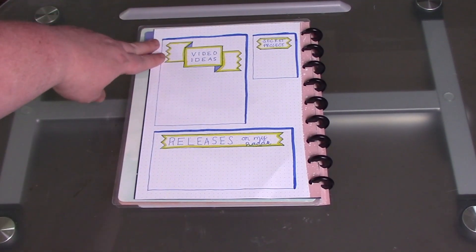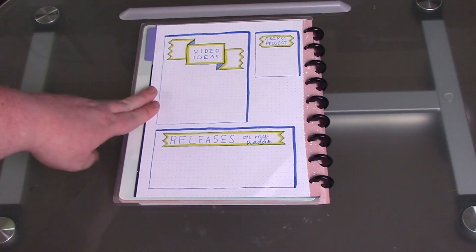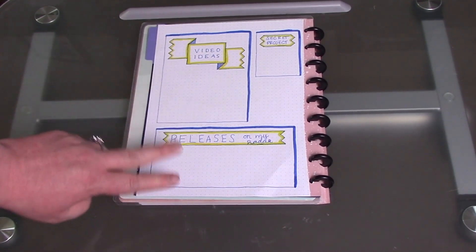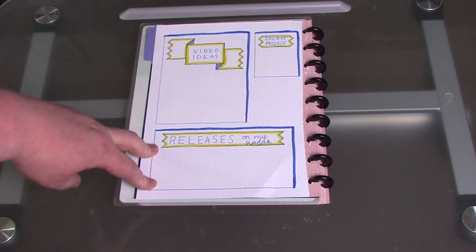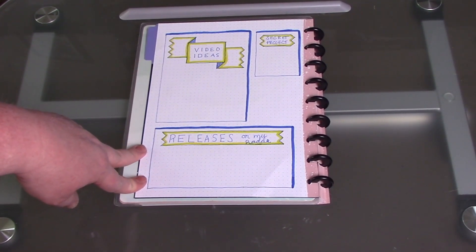I've got my video ideas here - these are videos that I need and want to make in the month of January. These are my releases on my radar. This video is already up, but I have not filled it in my bullet journal yet. I will be doing that after I film this video.